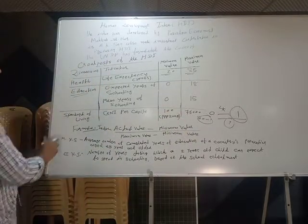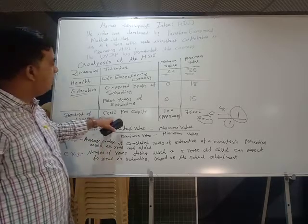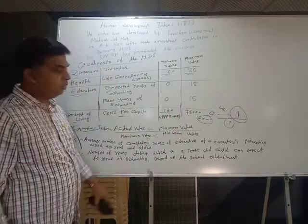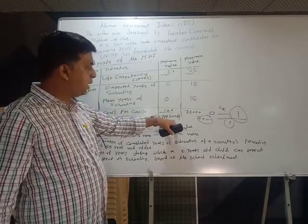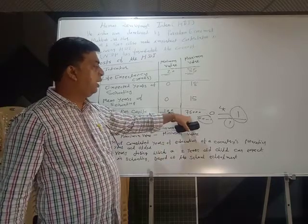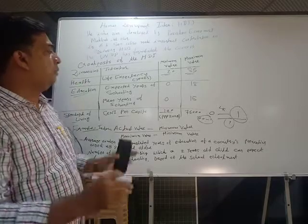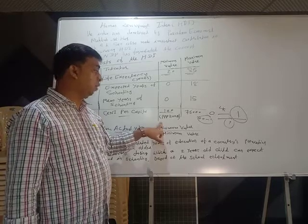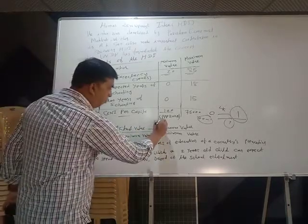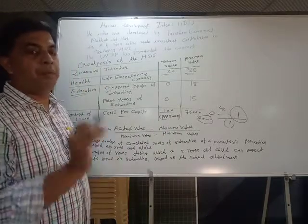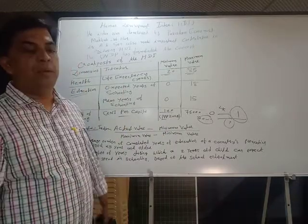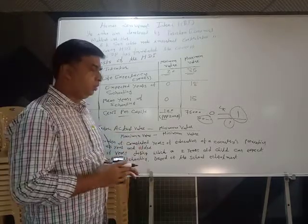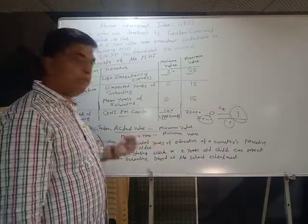Third and very important: standard of living. The indicator is GNI per capita, measured in dollars with 2011 as the base year, using purchasing power parity. The minimum value is $100 and maximum value is $75,000. But the key word is PPP - purchasing power parity. We have already discussed this theory in second year economics.